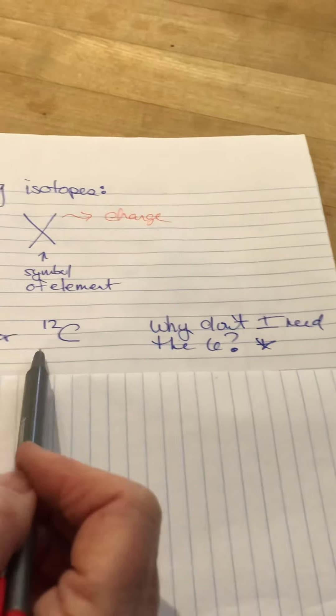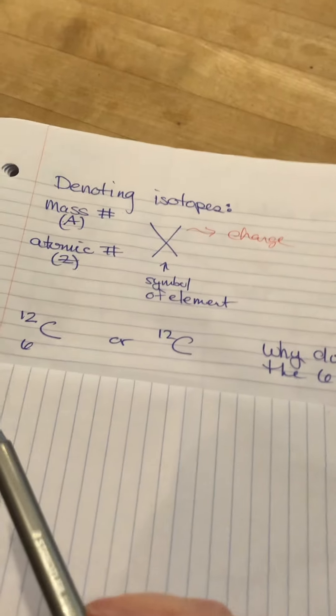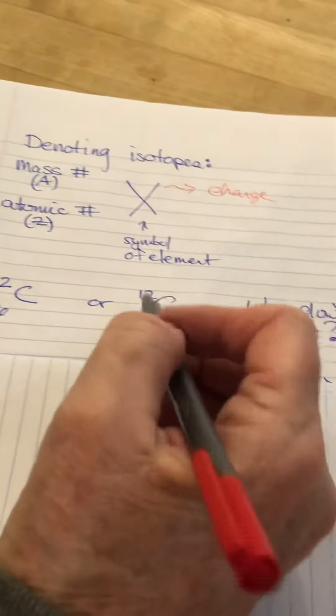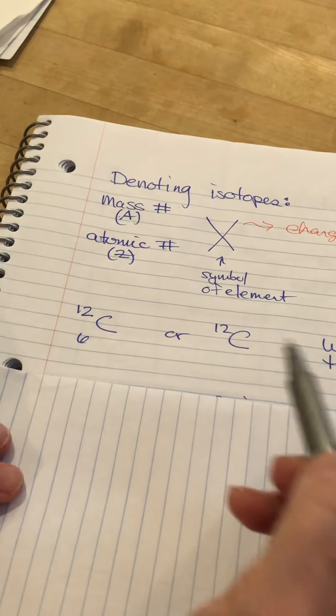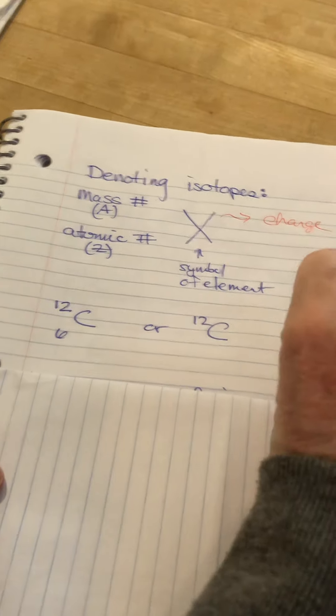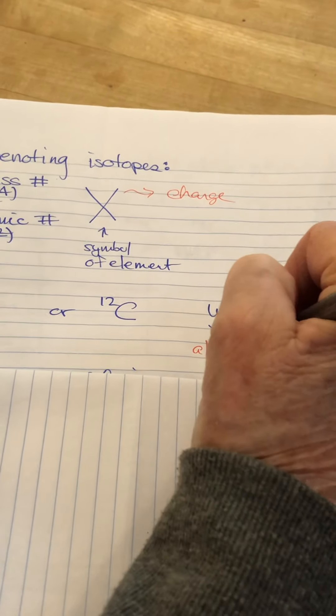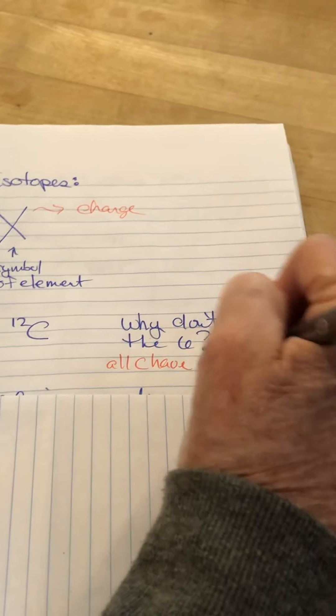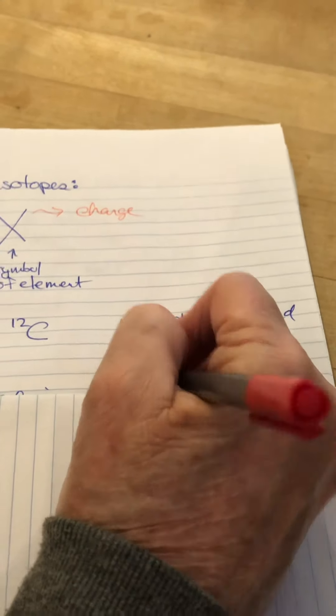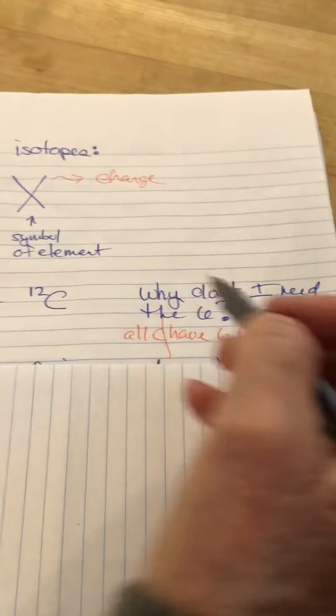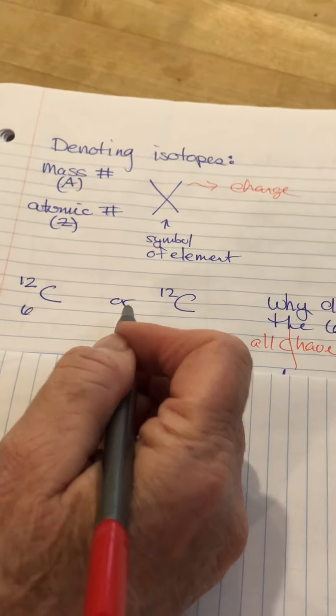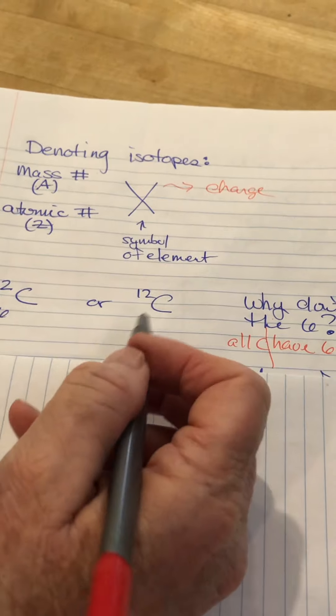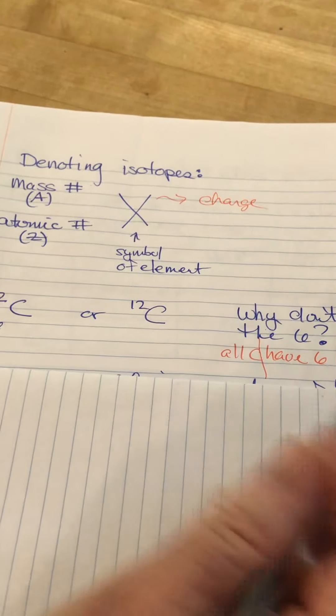Why don't I need the 6? Why are both of these equally good numbers or good symbols to write? They're equally good symbols because I know that every single carbon in the world has 6 protons. All C have 6 P+. I can't change this number, so I don't really have to put it because I am assuming, and the author of the book is assuming, that you know this and that you have a periodic table to look it up if you don't know it.